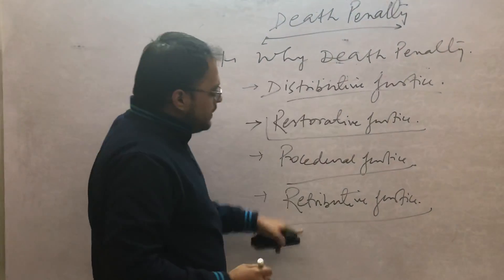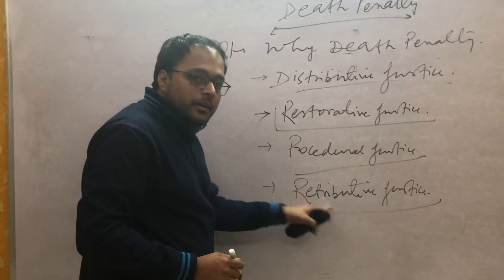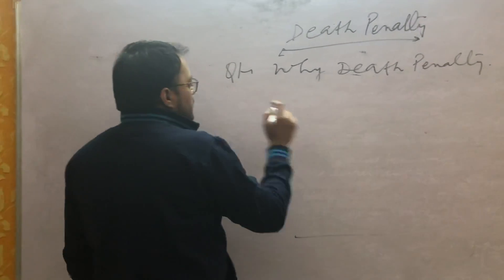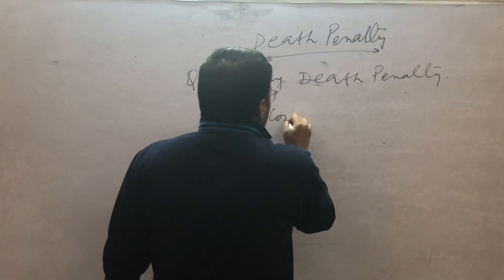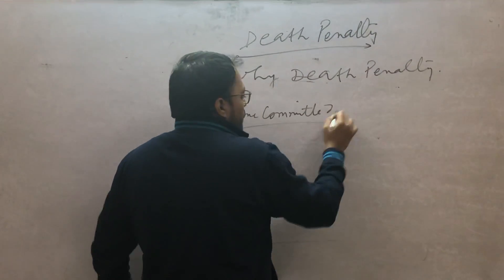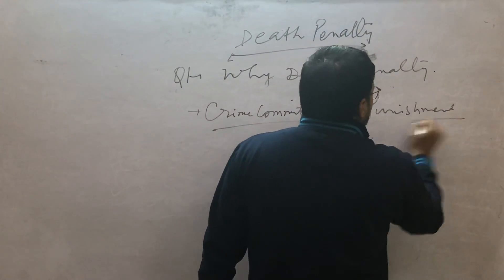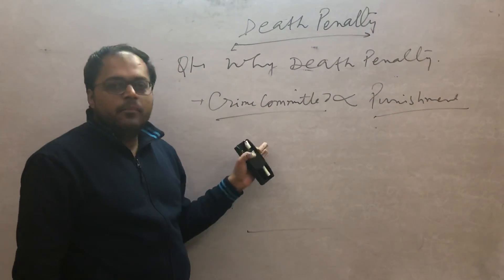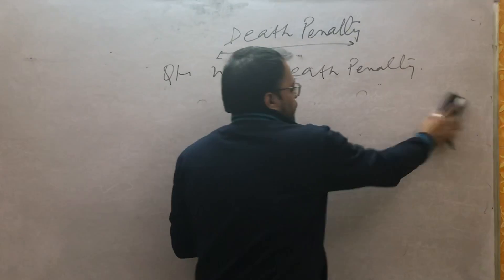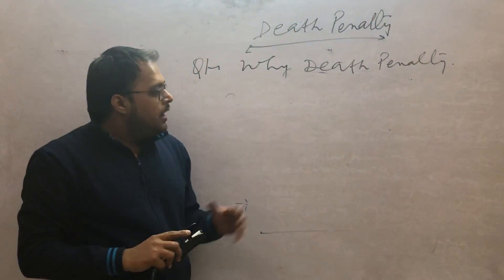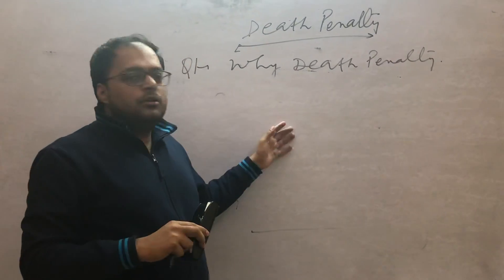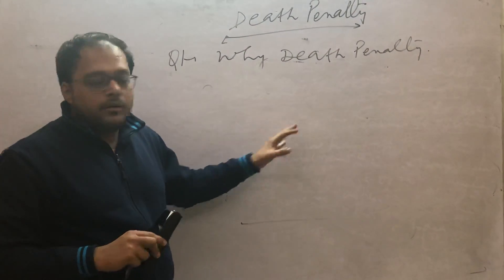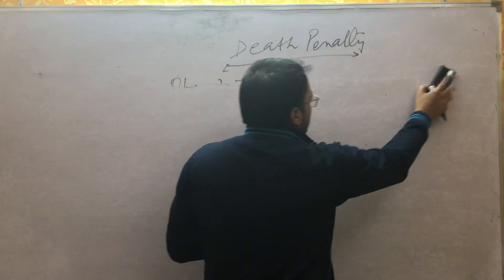Fourth is retributive justice. Death penalty comes under retributive justice. Retributive justice means the crime committed or offense must be proportional to the punishment. Punishment must be proportional to the magnitude of the crime committed. David Miller also says that punishment should not be too harsh, should not be too lax — it should be in proportion to the crime committed. With this, the first question gets completed.